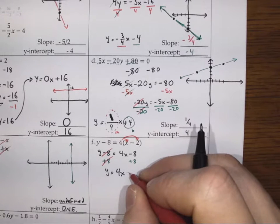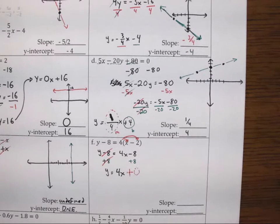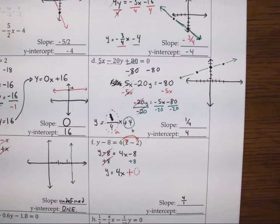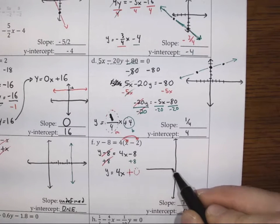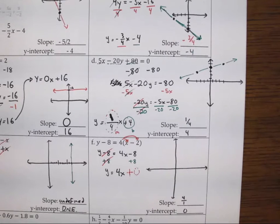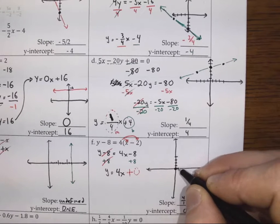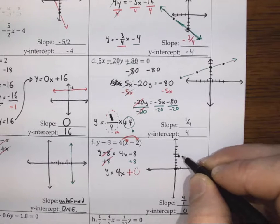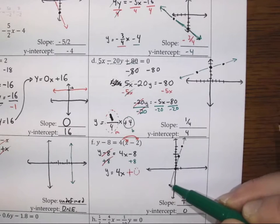So the line equation is y = 4x plus 0, which is just y = 4x. The slope is 4 over 1 and the y-intercept is 0. That means the line passes through the origin — I'll have a y-intercept at 0, and we rise 4 for every 1 we run, giving a pretty steep line.